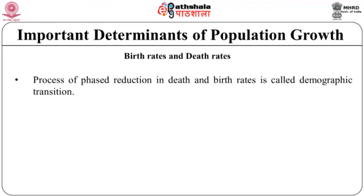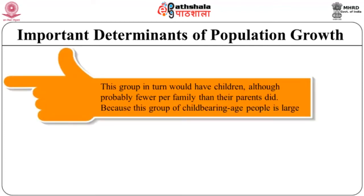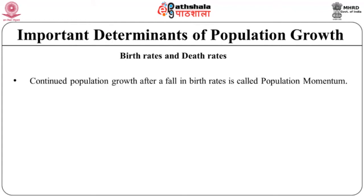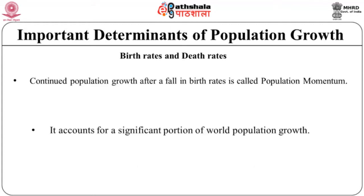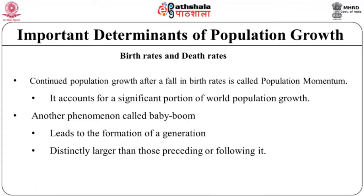Demographic transition alters population growth rates in several stages. Because death rates fall before birth rates, population growth initially speeds up — a phase referred to as the mortality transition — adding a large cohort of young people to society. This group would in turn have children, although probably fewer per family. Because this childbearing-age group is large, population continues to grow in absolute numbers even as per capita birth rates decline. Demographers call this phenomenon the fertility transition. The global fertility rate has declined from about 5 children per woman in 1950 to just over 2.5 in 2006.